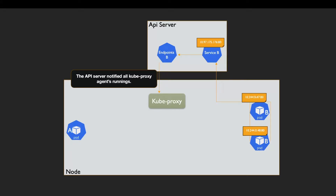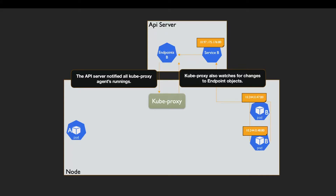One important thing to notice is that kube-proxy also watches for changes to the endpoint object. It checks things like pod readiness status or pod label changes, because if a pod's label changes it goes out of scope of the service. This way kube-proxy understands that connections to those pods should be failed over.